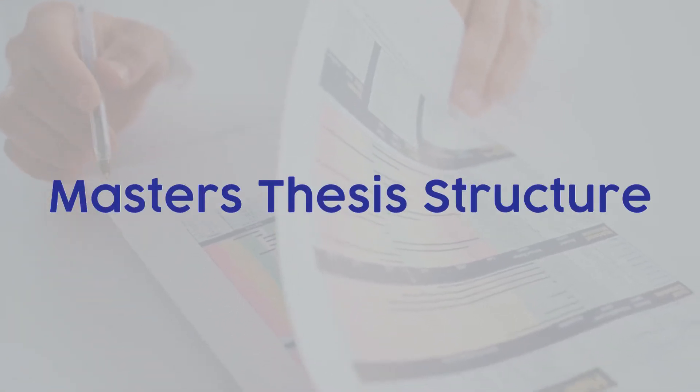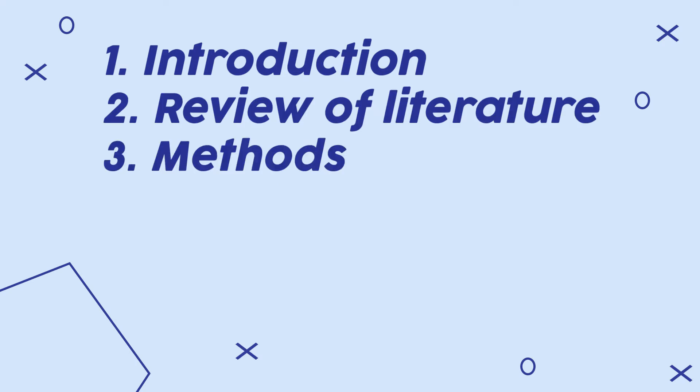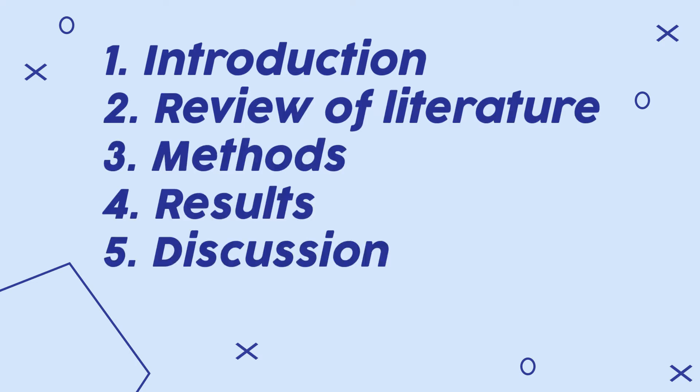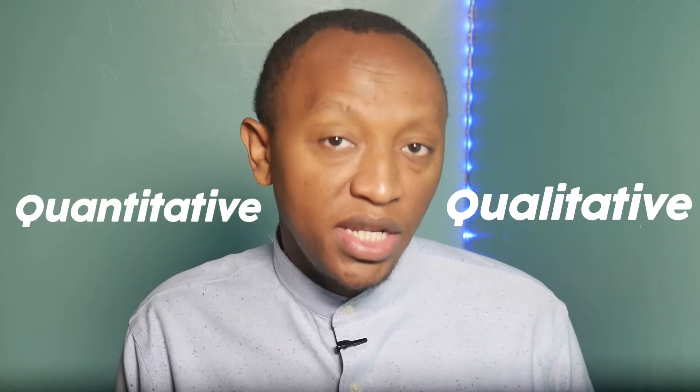In this video, we'll look at the basic structure of a standard master's thesis. A master's thesis should have five main chapters, and each chapter will have a clear focus and objective. The five main chapters are: 1. Introduction, 2. Review of Literature, 3. Methods, 4. Results, and 5. Discussion. Most of the time, this structure will be the same whether you are conducting a quantitative or a qualitative study.